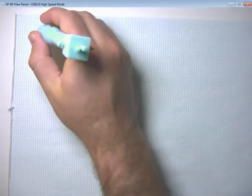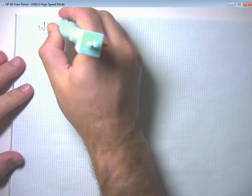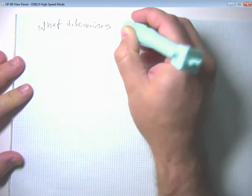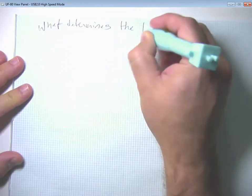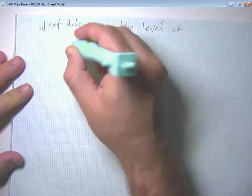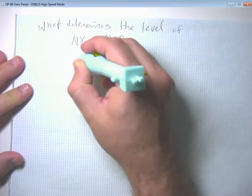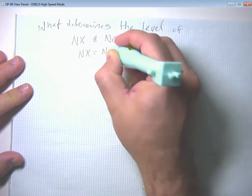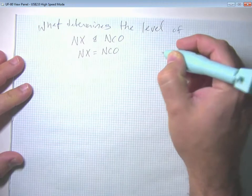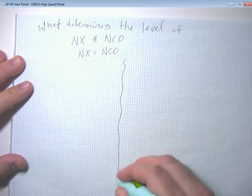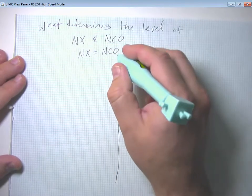Okay, so now let's go ahead and think about what determines the level of net exports and net capital outflow. Because remember, net exports equals net capital outflow. There's two ways of looking at this, and we can either look at the net export side or the net capital outflow side.